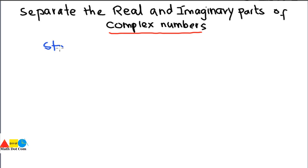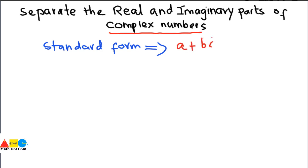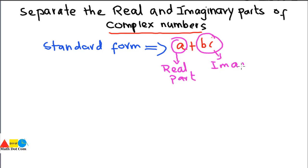The standard form of complex numbers, as we have already seen in our previous lecture, is A plus B iota. If the numbers are in any other form, we have to convert them into this form that clearly shows what is the real part and what is the imaginary part. We have to keep this in mind while applying operations on complex numbers.